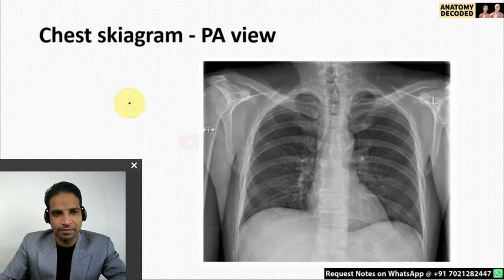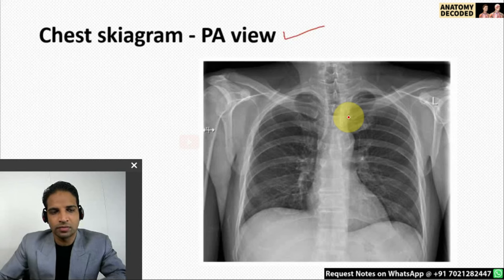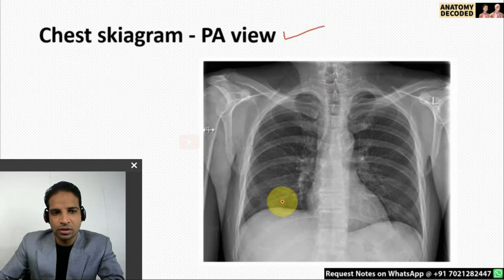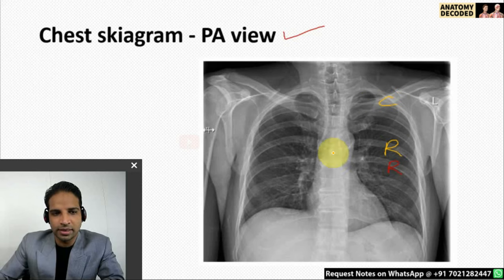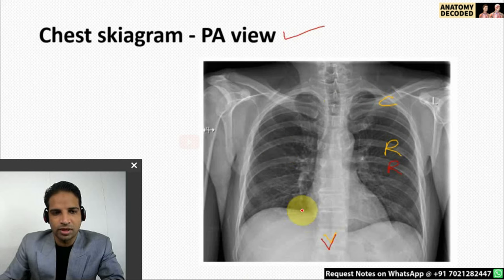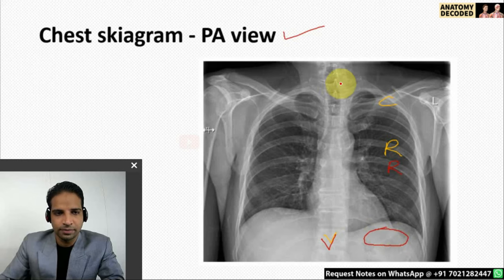Let us cover the chest skygram in detail. This is the chest skygram, posterior-anterior view. The ribs are visible, the clavicle bone is visible, and in the midline the bodies of the vertebrae are visible. Soft tissue shadow of the heart is visible, and air shadows of the lungs. Air shadow of the air in the fundus of the stomach is also visible, as is the air shadow of the trachea.